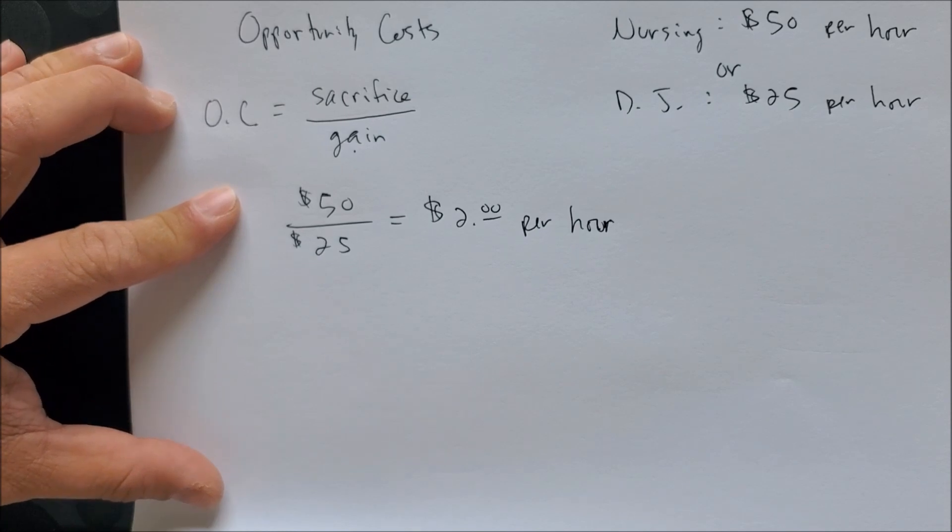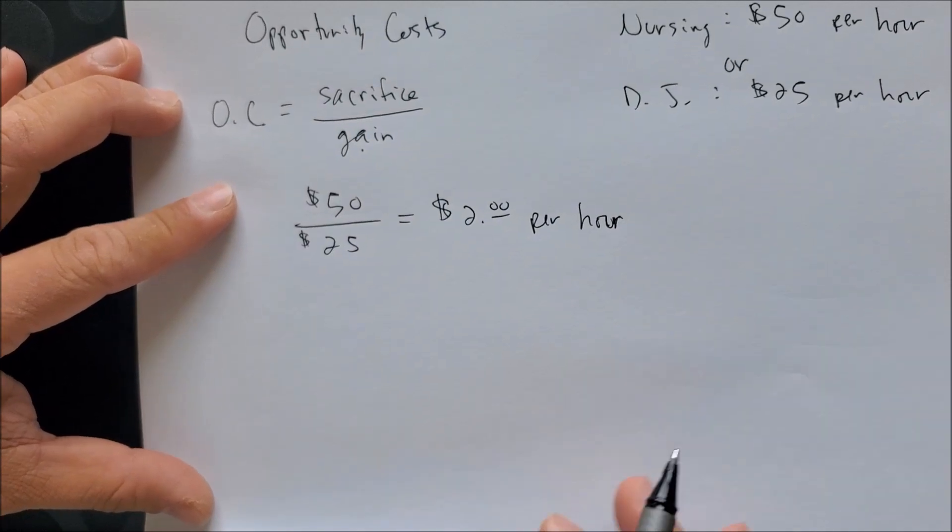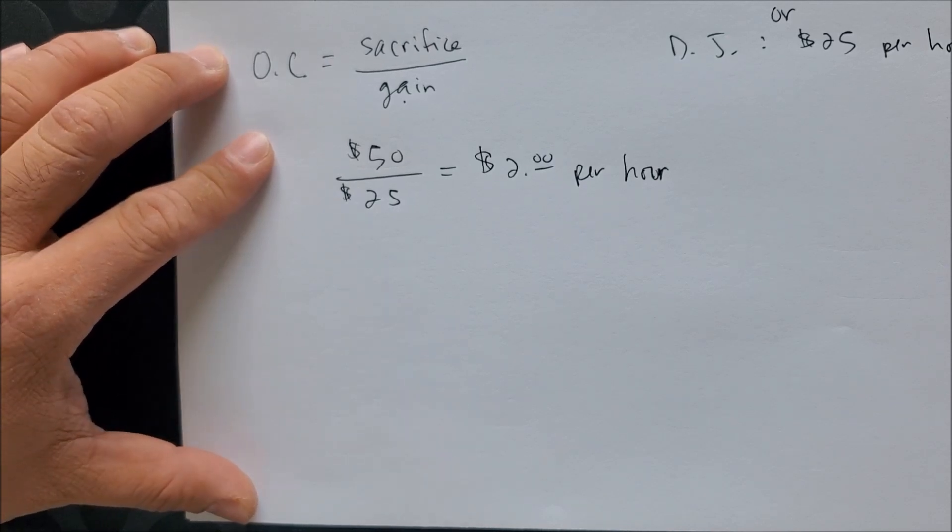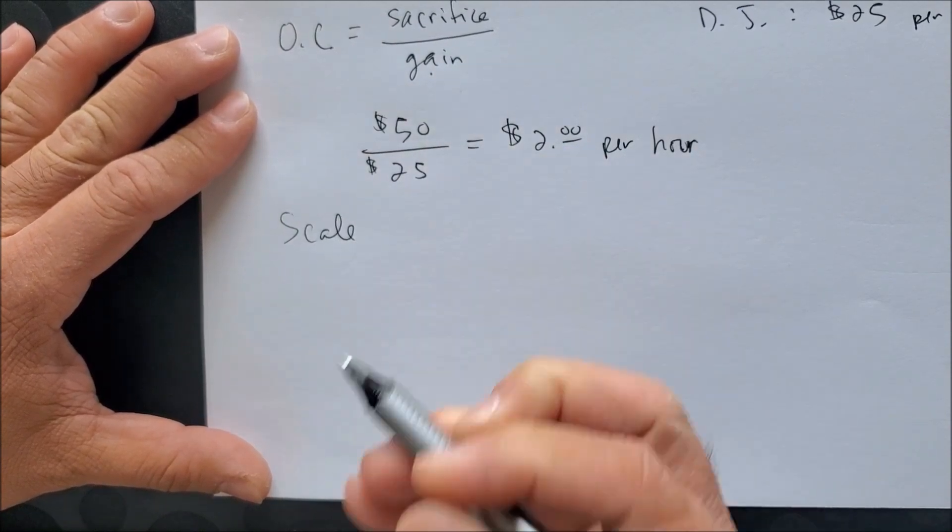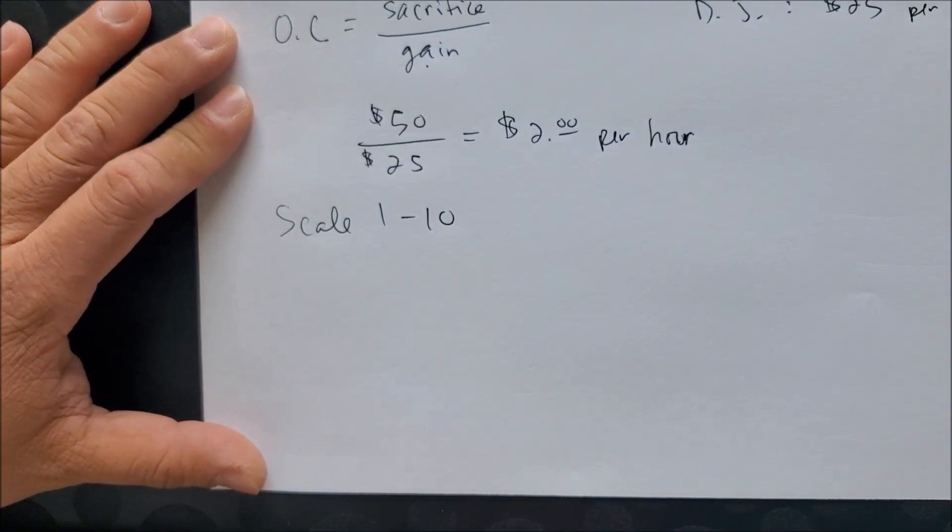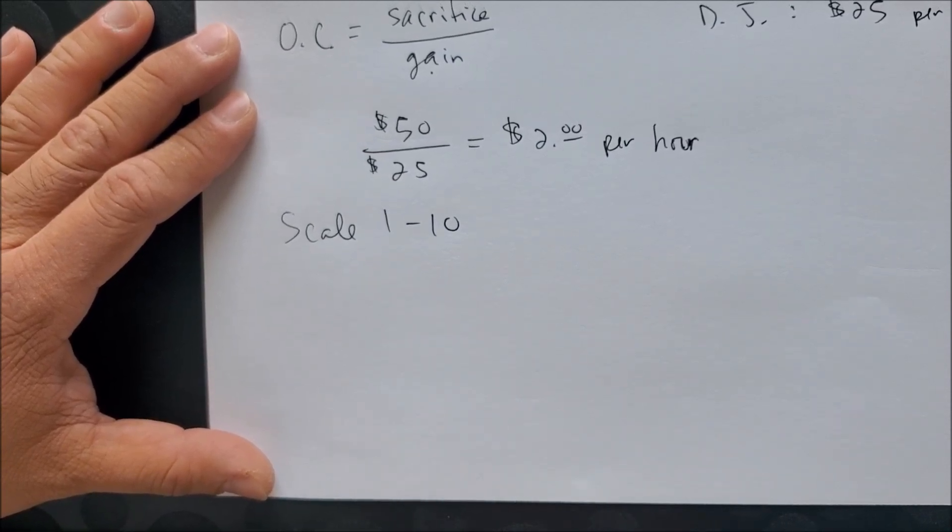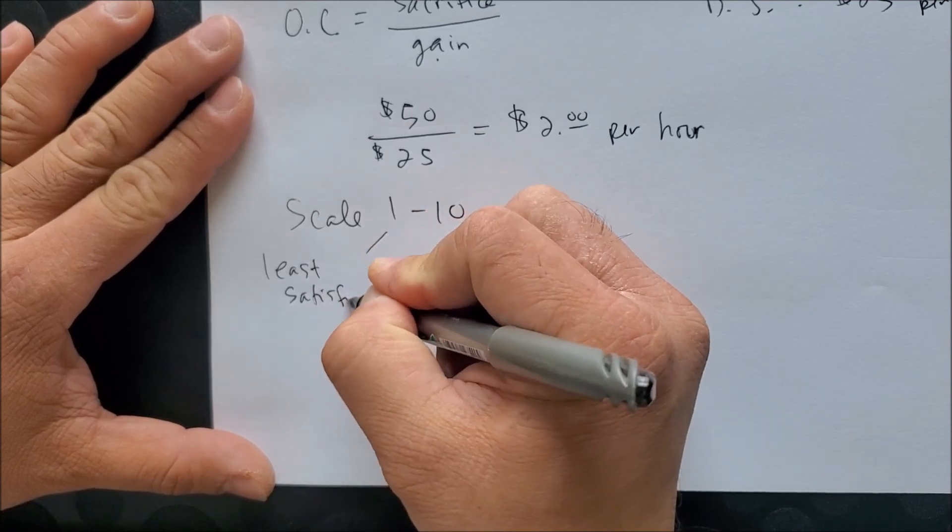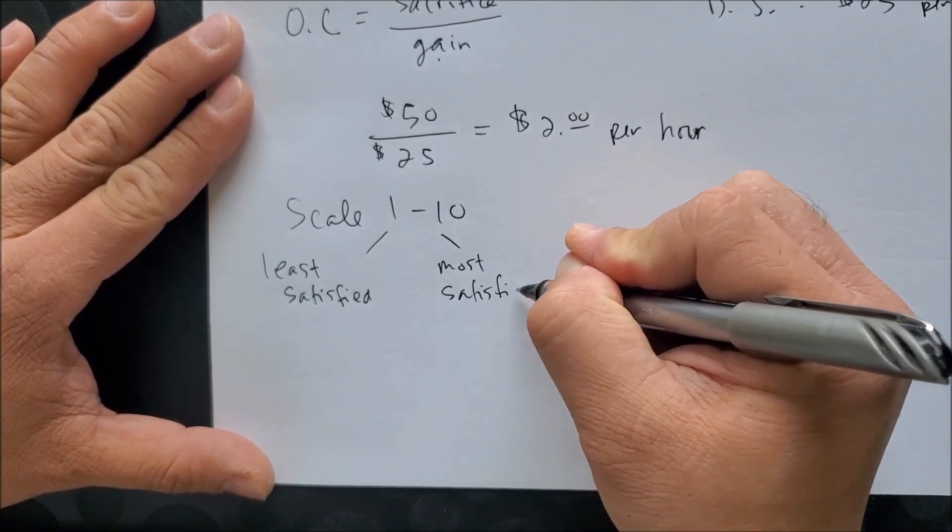But is that enough to make people choose to become a nurse or a different occupation? Now we need to know exactly how we can use Opportunity Costs in more of a satisfaction environment. We can look at a simple way to do that using a scale from 1 to 10. The scale of 1 to 10 will represent the satisfaction you get in one of these occupations.